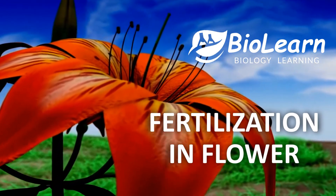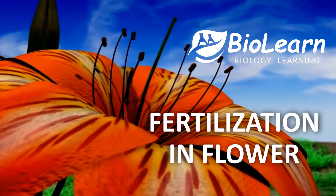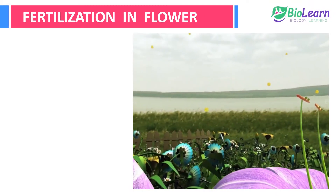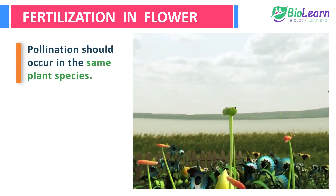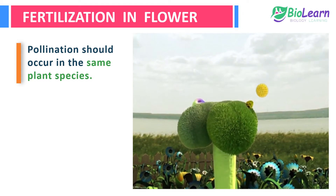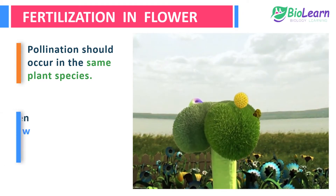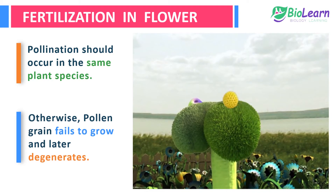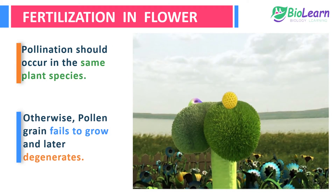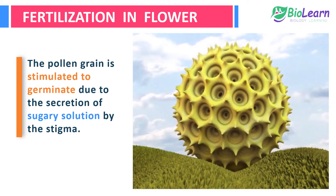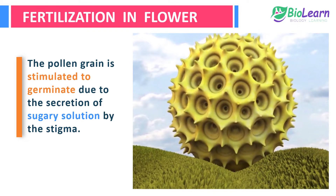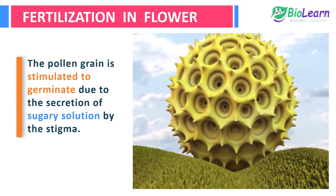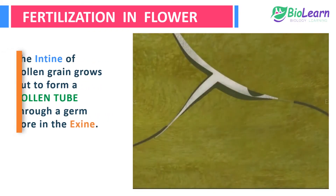In this video you are going to learn about the fertilization process in a flower. The pollen grain germinates only if it falls on the stigma of the flower of the same plant species; otherwise it fails to grow and degenerates. After landing on the stigma surface, the pollen grain is stimulated to germinate due to the secretion of a sugary solution by the stigma.